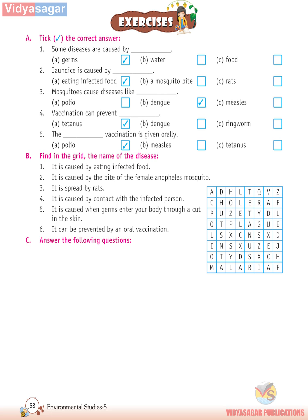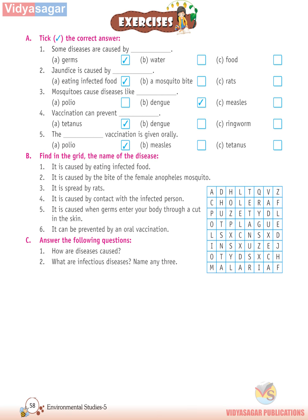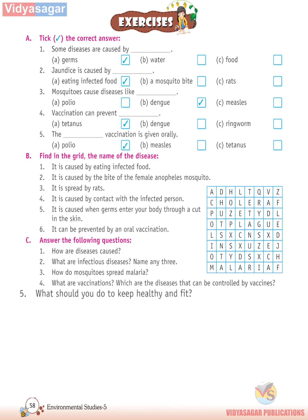C. Answer the following questions. First, how are diseases caused? Second, what are infectious diseases? Name any three. Third, how do mosquitoes spread malaria? Fourth, what are vaccinations, and which diseases can be controlled by vaccines? Fifth, what should you do to keep healthy and fit?